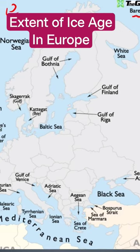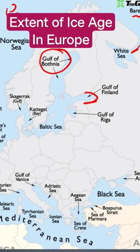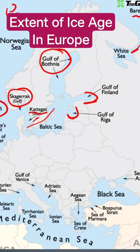Observing from the north: the Barents Sea is here, then you have the White Sea gulf area, then the Gulf of Bothnia, Gulf of Finland, and Gulf of Riga. Then this is the Baltic Sea. Then you have the Kattegat Bay, then Skagerrak, and then the North Sea.